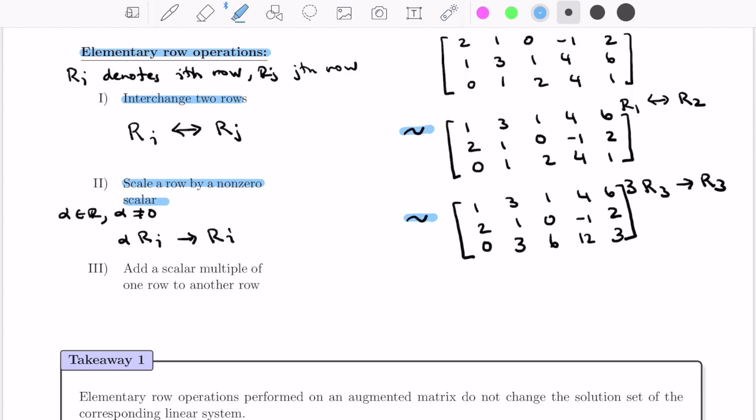Finally, the third type of elementary row operation we can do is we can add a scalar multiple of one row to another row. Notationally, this will look like the following: we'll let beta be any real number. Here, 0 is also an okay number to pick. We'll take the i-th row and add to it beta times the j-th row, and put that in the place of the i-th row. Again, this is okay because it doesn't change the solution set of a linear system.